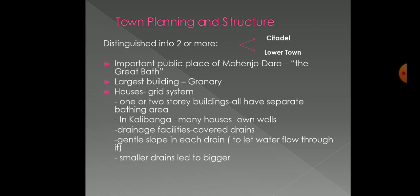The largest building is the granary, found both in Harappa and Mohenjodaro, which is 45 meters long and 15 meters wide. Six such granaries have been found.